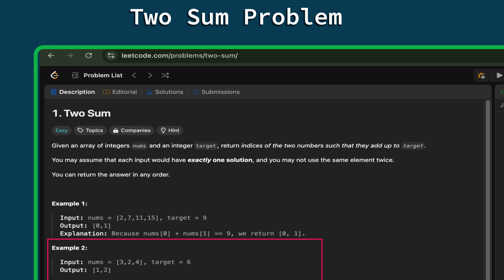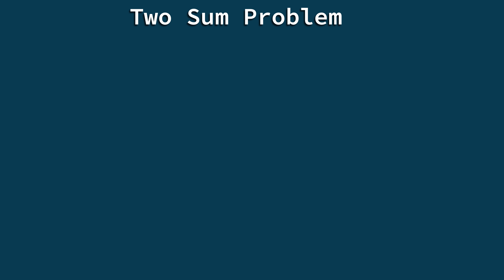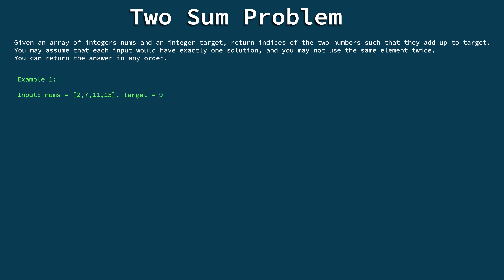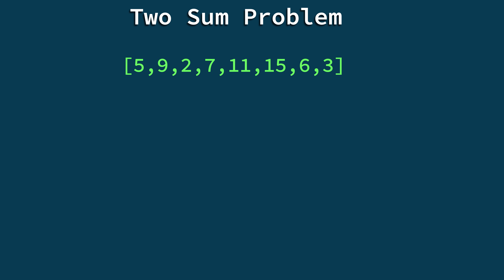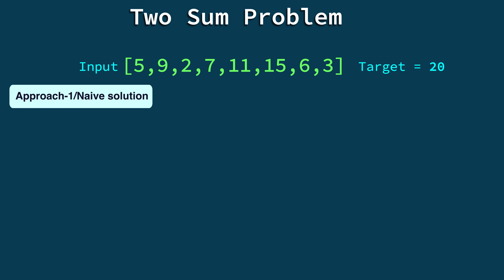It's easy to guess the pair when the input array is very small, but if the array has hundreds of elements, it becomes difficult. So let's think about the solution programmatically. In an interview, always remember — don't jump to the optimal solution first. Gradually optimize based on interviewer feedback. The naïve solution gives you comfort and makes it easier to move toward the optimal. This rule applies whenever you're solving a DSA coding problem.